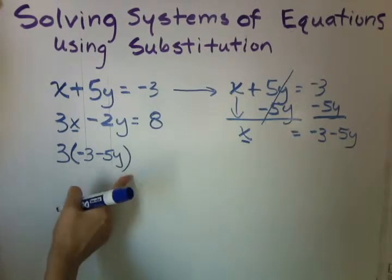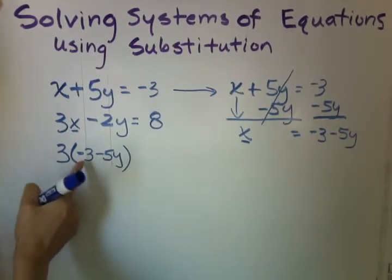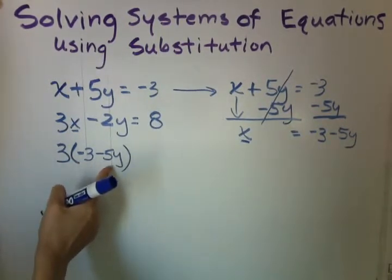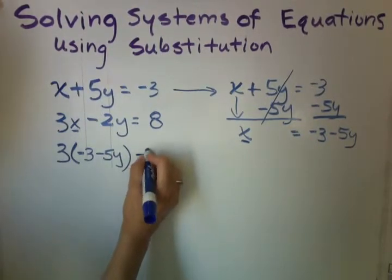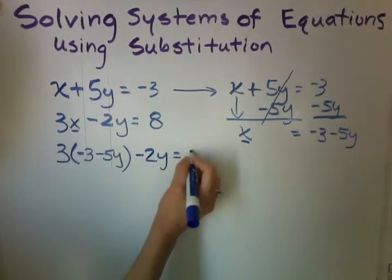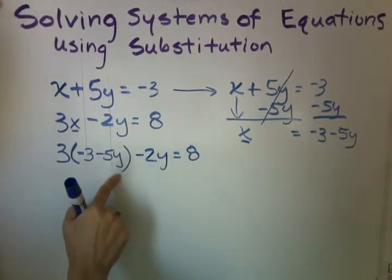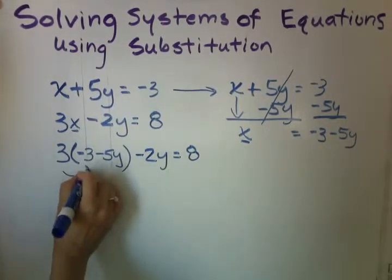Common mistake is we don't put parentheses and we end up multiplying this to this and forgetting about the negative 5y. Copy the problem exactly the way it is above with your substitution. And now you can go ahead and distribute.